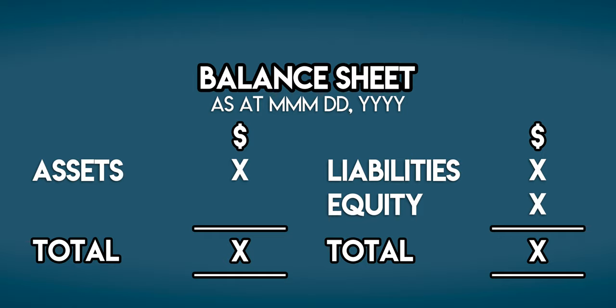We'll call this one the basic balance sheet. And as its name suggests, it's got to balance. That means that total assets must always equal total liabilities and equity.